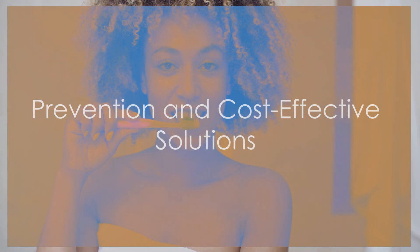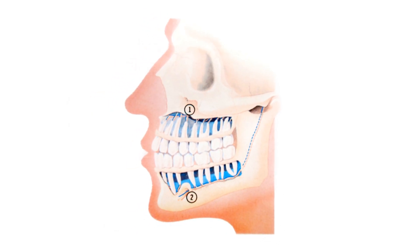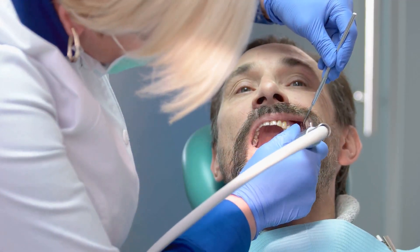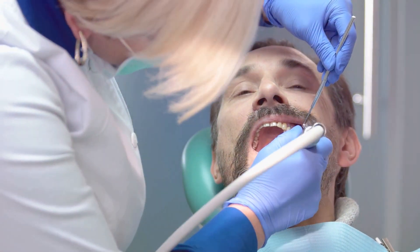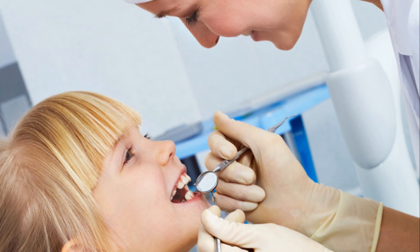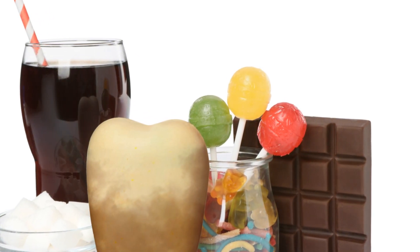Preventing an abscessed tooth is better than treating one. Good oral hygiene is crucial — this includes brushing twice a day and flossing regularly. Regular dental check-ups can catch problems early. Eating a balanced diet and avoiding sugary foods can also help, as sugary foods can lead to cavities which can cause an abscess. Drinking plenty of water after meals can wash away food particles and bacteria.